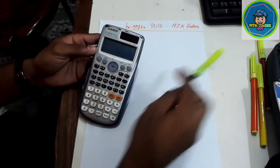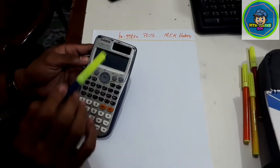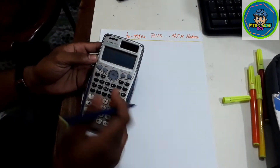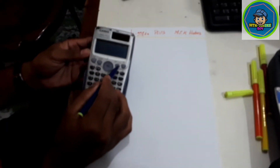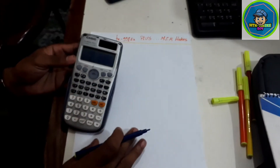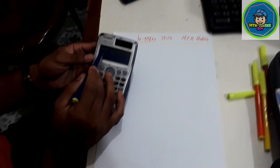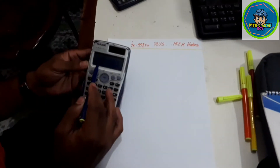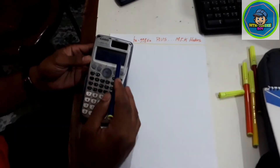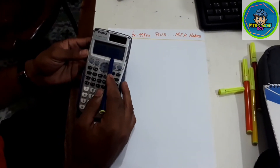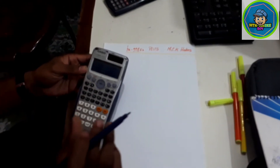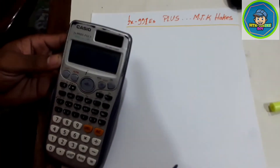For certain points, I will show you the math mode first. There is a mode button — pressing it gives us: number 1 is complex, number 2 is base, number 3 is EQ, number 4 is matrix, and one shot number is table.